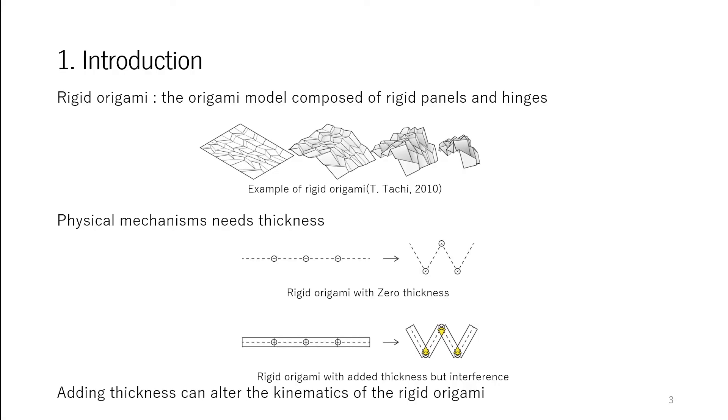Rigid origami, which is the origami model composed of rigid panels and hinges, is useful for various engineering purposes, especially for designs of transformable architecture.